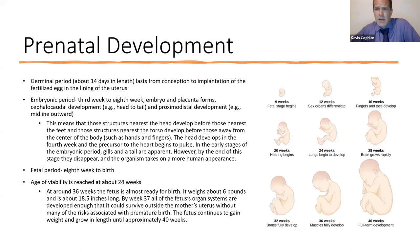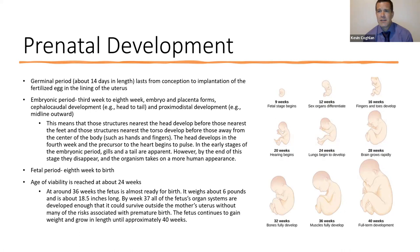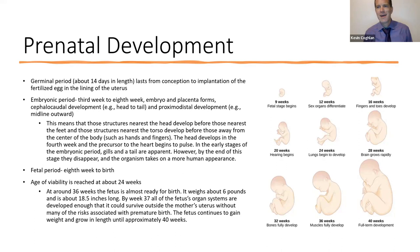Prenatal development in the book breaks down into three phases. First is the germinal phase, about 14 days long, lasting from conception to the implantation of the fertilized egg in the lining of the uterus. Then you have the embryonic period, from the third week to the eighth week — this is when the embryo and the placenta form. Cephalocaudal development refers to how we grow from our head out, and proximodistal development refers to growth from your midline — like your hips — out to your feet or hands. We start from the center and work our way out.